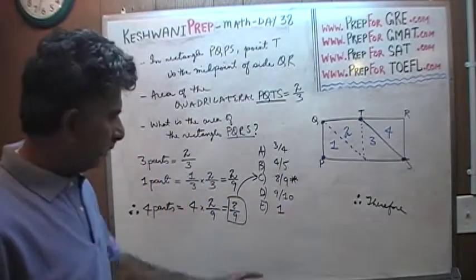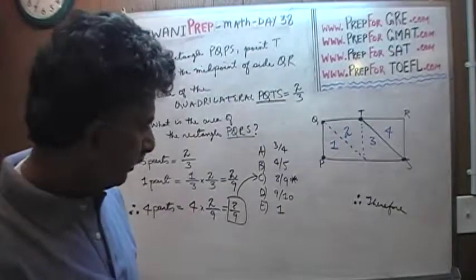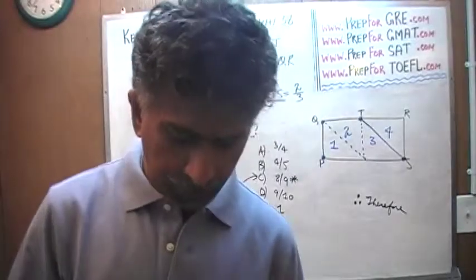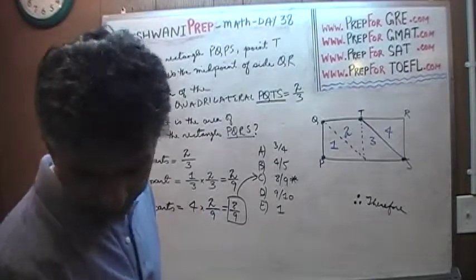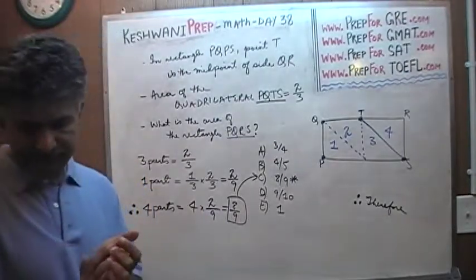The answer is not one. Answer is not four-fifths, three-quarters, or nine-tenths. The area of the whole thing is eight-ninths. That was the answer. And that's it. That's the end of it.